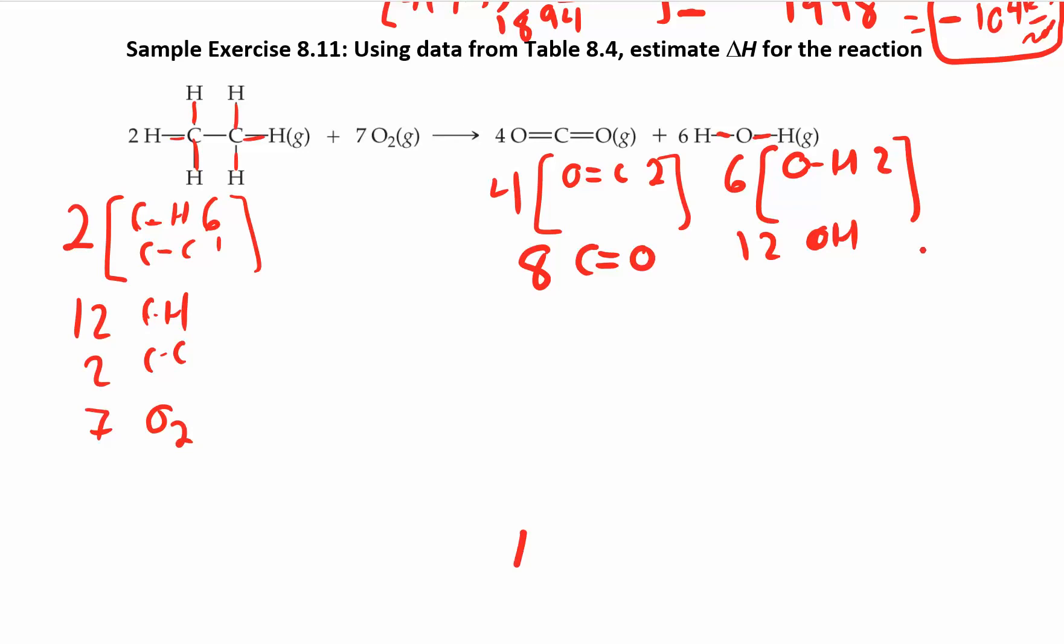You can look up all those numbers in the table. I already have that for you. C-H is 413 and C-C is 348, and O2 is 495. On the other side, you have eight C=O bonds at 799, and O-H is 463.